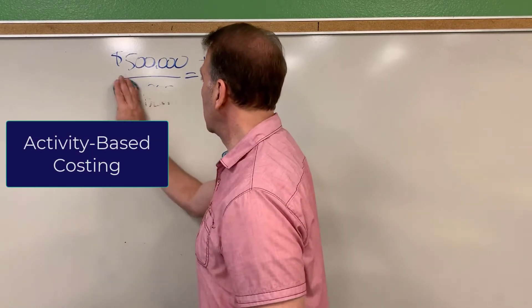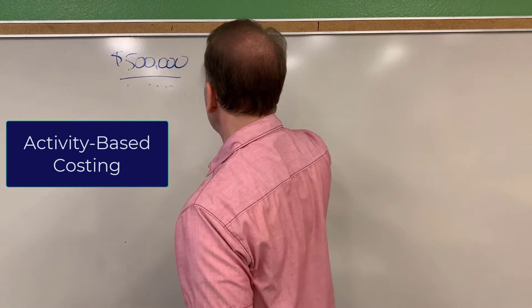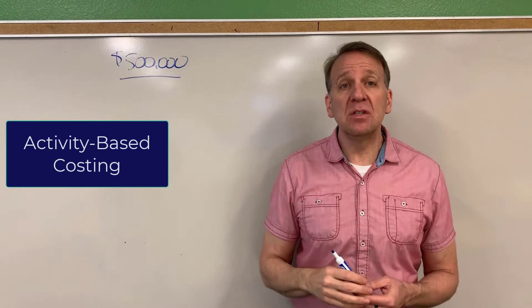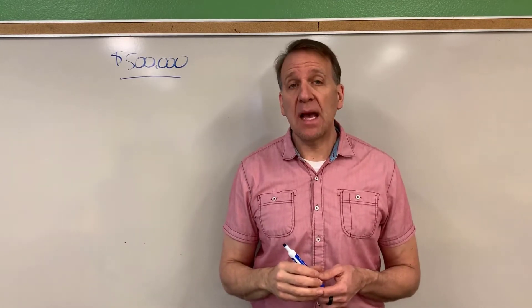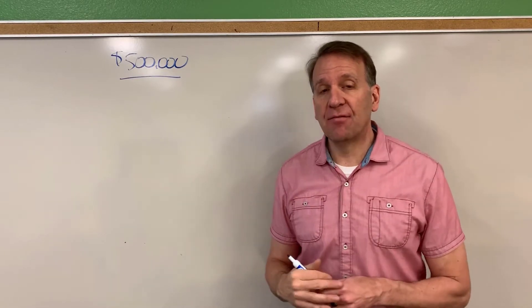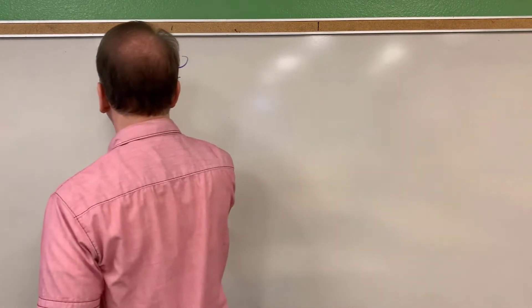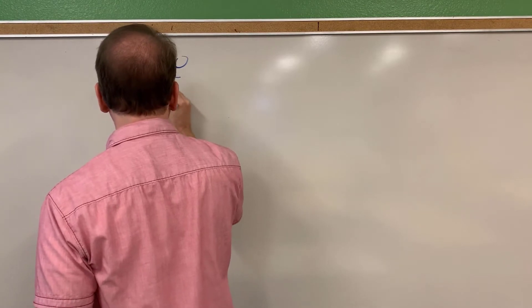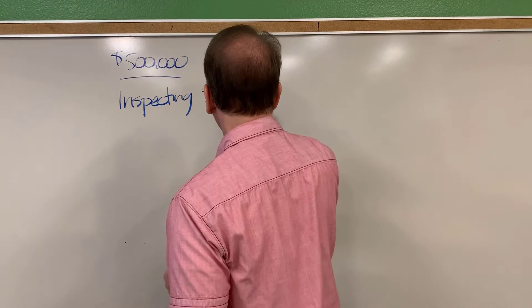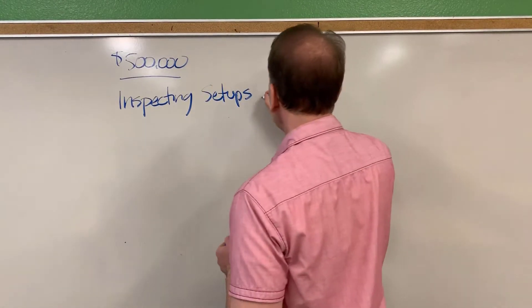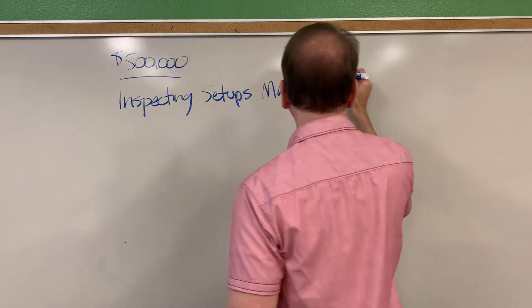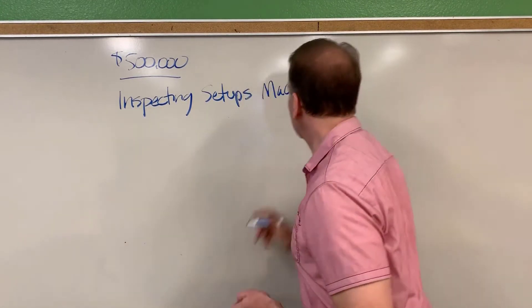In activity-based costing, we're going to take this $500,000 and we're going to divide it into different activities that take place in the plant. So I'm assuming that we have four different activities: inspecting, setups that take place, machining, and supervision.